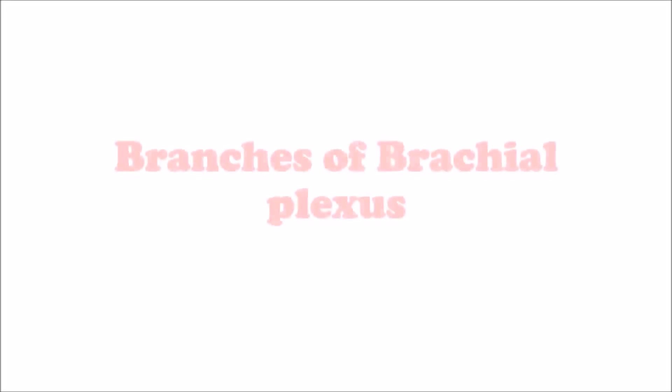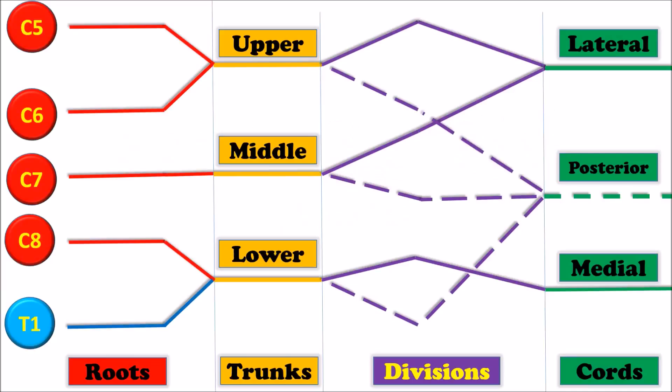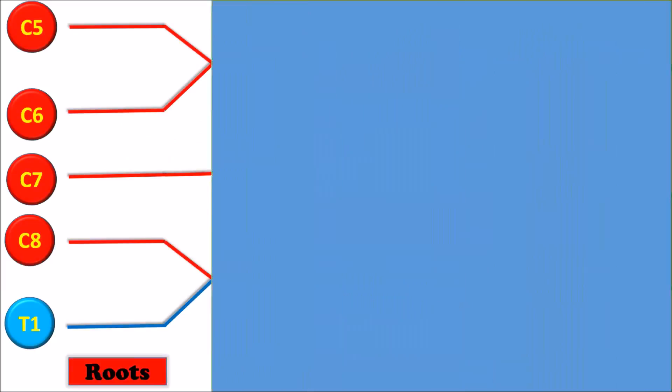In this video we will discuss the branches of the brachial plexus. Branches arise from the roots, the upper trunk, and cords of the brachial plexus. Let's see the branches from the roots.